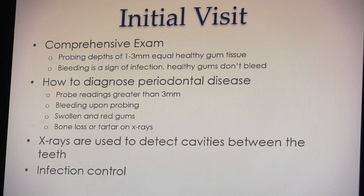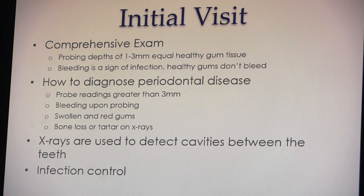To diagnose periodontal disease we look for probing readings greater than three millimeters, bleeding upon probing, swollen and red gums, bone loss, and tartar on x-rays. Bitewing x-rays show upper and lower teeth and are also used to detect cavities between the teeth — that's how doctors see interproximal decay. Brushing is the single most important instrument in plaque control.